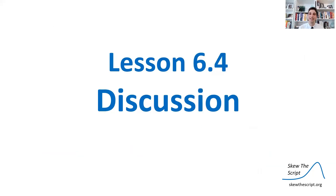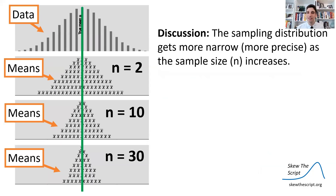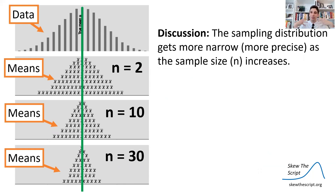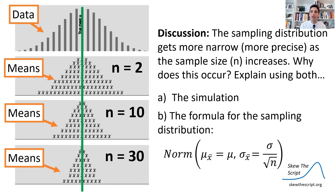Finally, we'll end today with our discussion. You may have noticed that the sampling distribution tends to get more narrow as the sample size increases — you can see the sampling distribution shrinking in width when we get a higher sample size per sample. Why does this occur? I want you to explain and explore using A, the simulation — go back to the simulation and explore using that — and B, using the formula for the sampling distribution, especially the spread part of that formula. Why do you think this is occurring? That's all for today, statisticians. We'll discuss this in class. We'll see you next time.